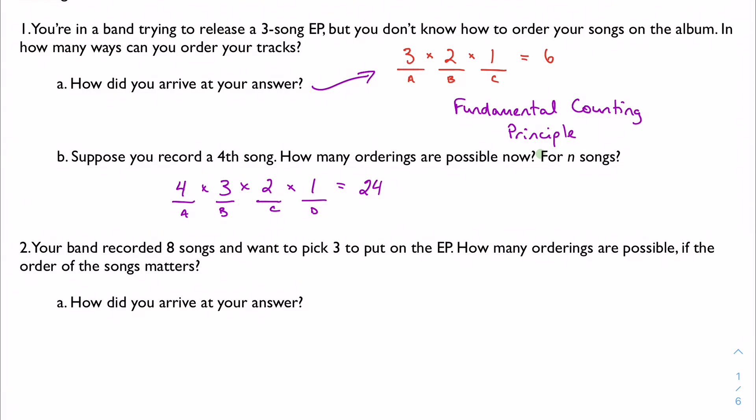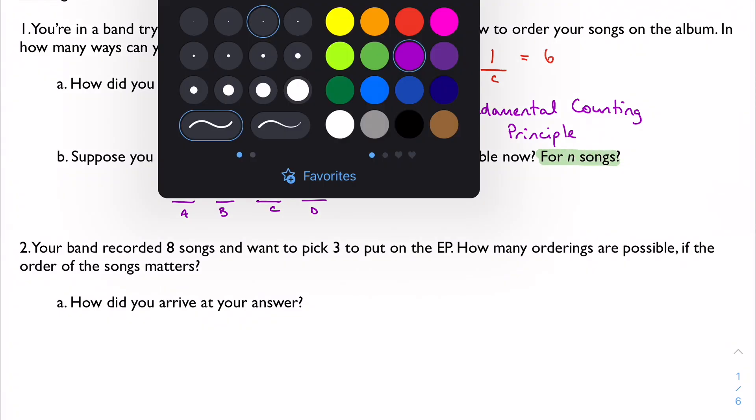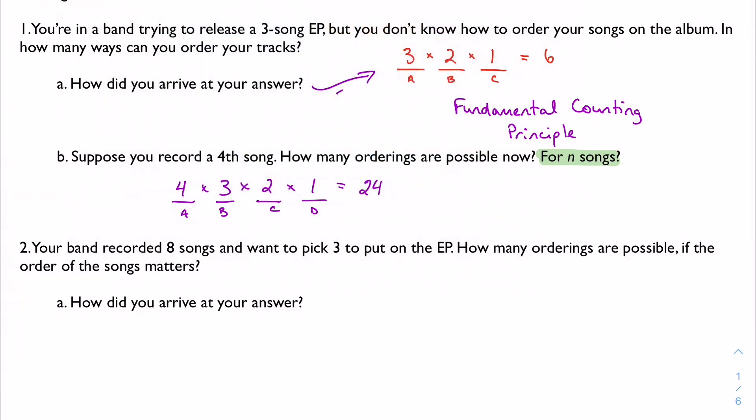What about if I talk in general? How about for n songs? For n songs, I can put n of my songs in the first slot. I can put n minus one song, because I've already used the first song in the second slot, and n minus two. And I'm going to keep this process going until I get to 3, 2, 1.